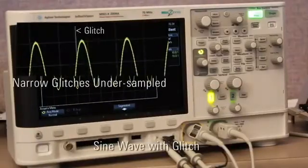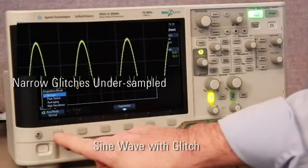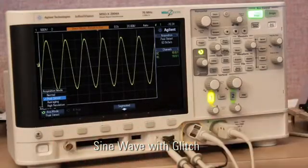The sine with glitch training signal is used to teach students about possible oscilloscope undersampling and when to use the scope's peak detect mode to overcome this potential problem.